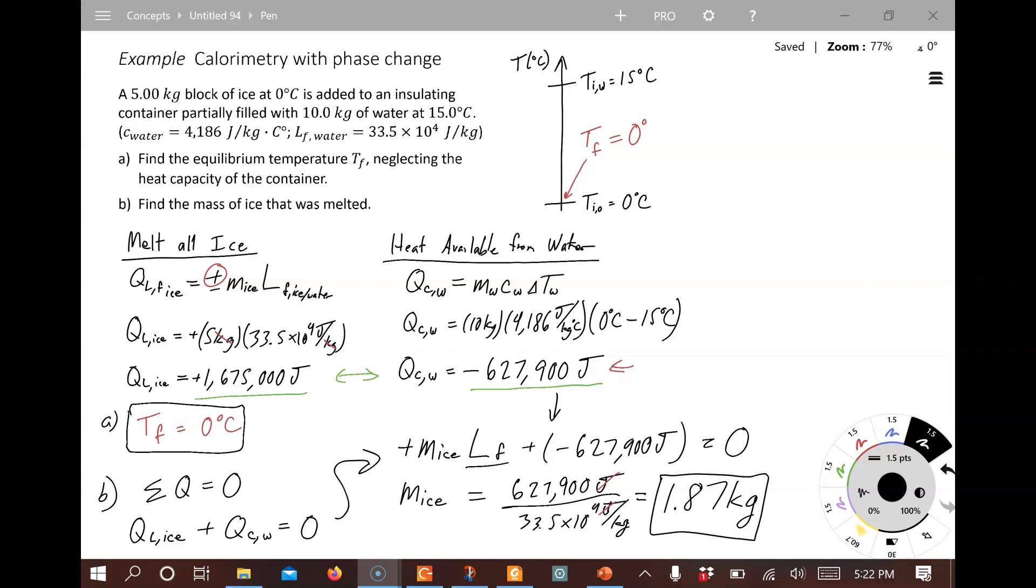So at the end, we are left with a mixture of ice and water at 0 degrees Celsius. And in fact, we still have, we had 5 kilograms. We've melted 1.87 kilograms. So we've still got a little over 3 kilograms of ice floating in the water at 0 degrees Celsius.